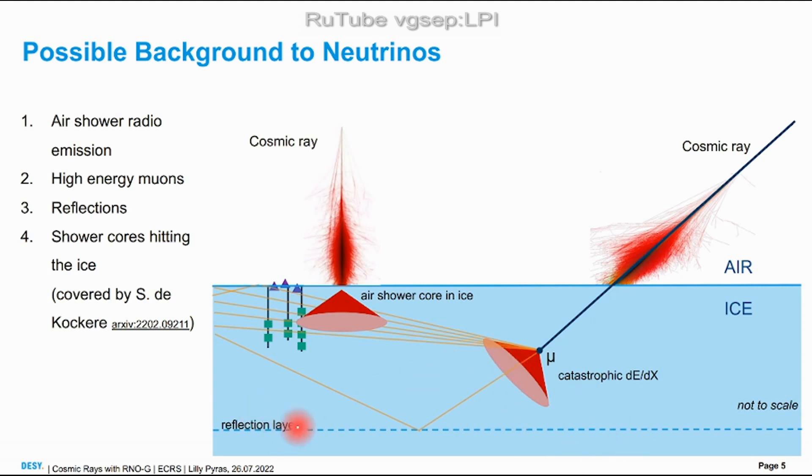We can also have reflective layers due to difference in the ice densities. Another thing Simon Thelke investigated is that vertical cosmic rays have really dense energy cores in the center which can also propagate into the ice and look like an in-ice neutrino-induced particle shower.